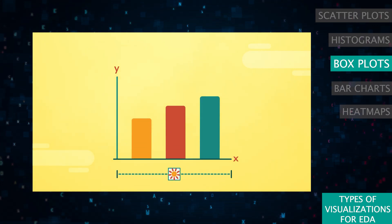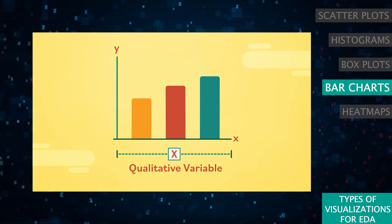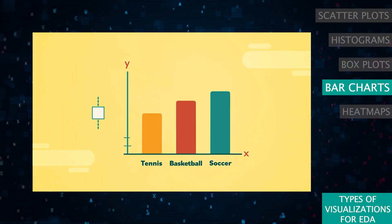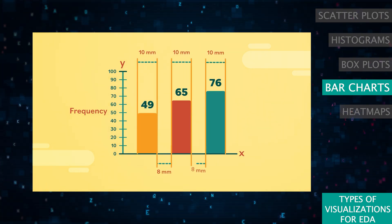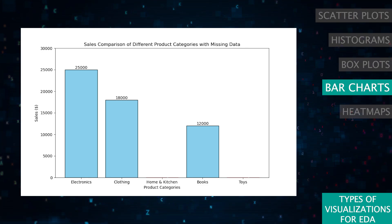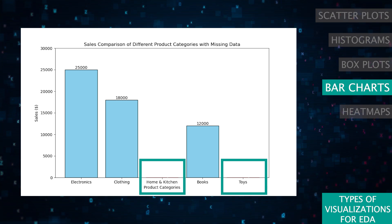For categorical data comparison, bar charts are your go-to when cleaning and preparing data. Want to compare the sales of different product categories? A bar chart will do the trick. It is also the best chart for identifying missing data. One look at this chart and you will see there's no data in the home and kitchen product categories and toys categories, so you can investigate that.